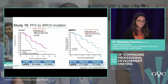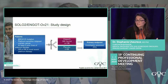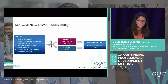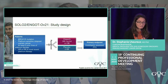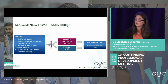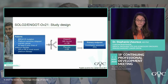Canada requires a phase 3 trial for drug approval, and that trial was SOLO-2. This population of BRCA1 and 2 mutation patients had a recurrence of high-grade serous ovarian cancer, responded to platinum-based chemotherapy, and if they had a complete or partial response, were randomized between olaparib maintenance or placebo. The dose was 300 mg BID as tablets.